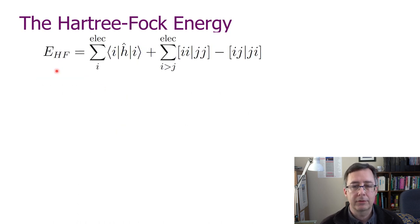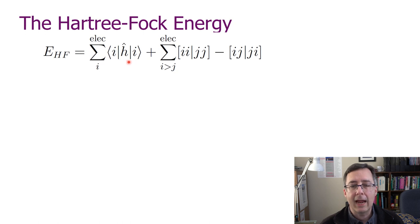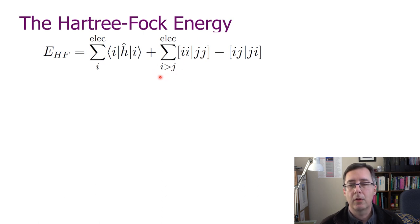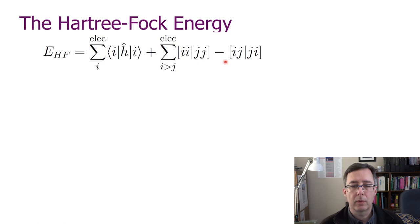Without going through all the details, here's the result. The Hartree-Fock energy is a sum of one-electron terms—the average value of the one-electron operator summed over all electrons—plus some two-electron terms from a restricted sum over all unique pairs of electrons, giving these square-bracket expressions. We haven't fully explained what those square-bracket terms are yet, so let's define them.